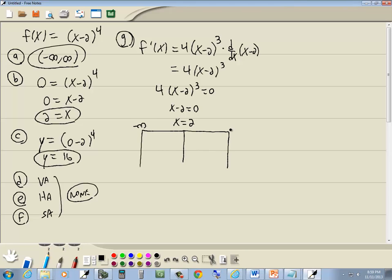Set up a table of intervals. Here's negative infinity, here's positive infinity. We want to choose test cases. Something between negative infinity and 2 like 0, something greater than 2 like 3. Now we want to plug those into our derivative. Our derivative is right here. What if I put 0 in? Well, 4 doesn't do anything. It's positive. 0 minus 2 is negative 2 to the third power is negative 8 times 4 is negative 32. So this is decreasing.